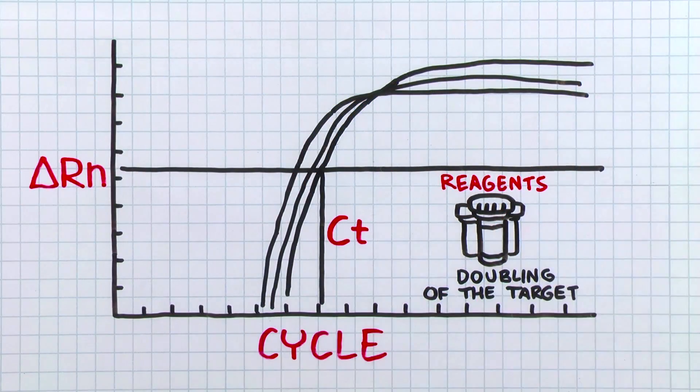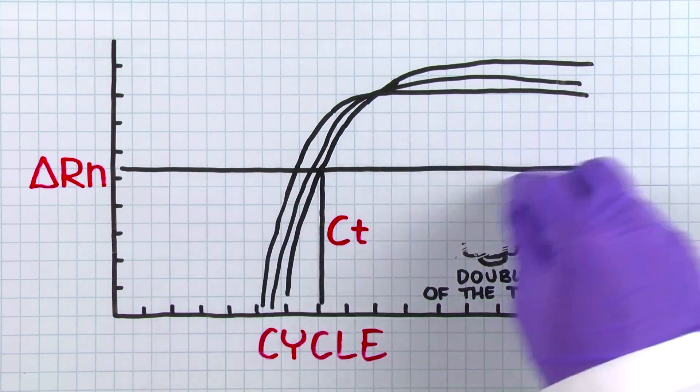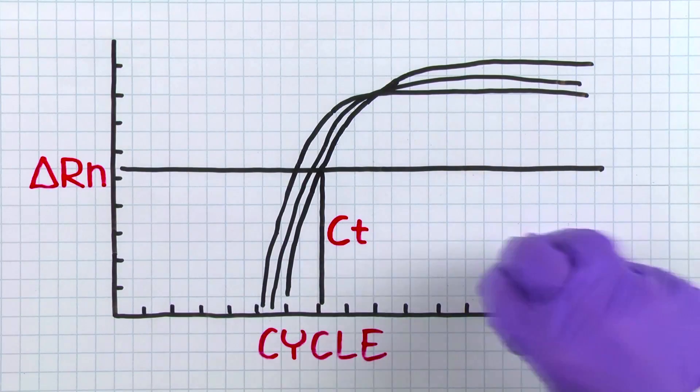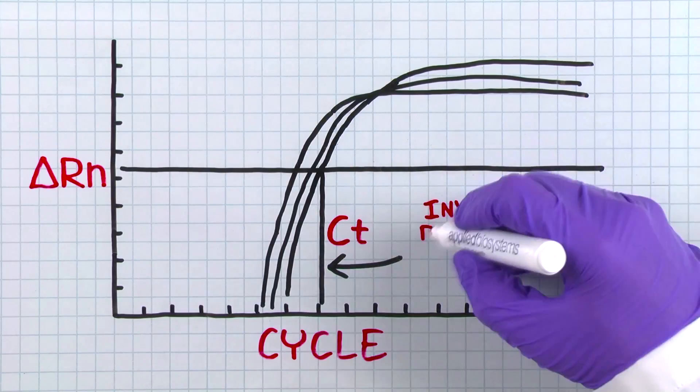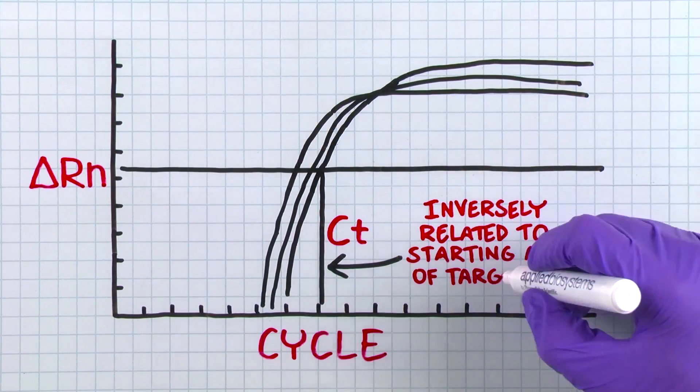OK. So now we've got a CT value. But what does this mean? And why is smaller better? The CT value, or threshold cycle, is the cycle number at which the fluorescent signal of the reaction crosses the threshold. The CT value is inversely related to the starting amount of our target DNA.